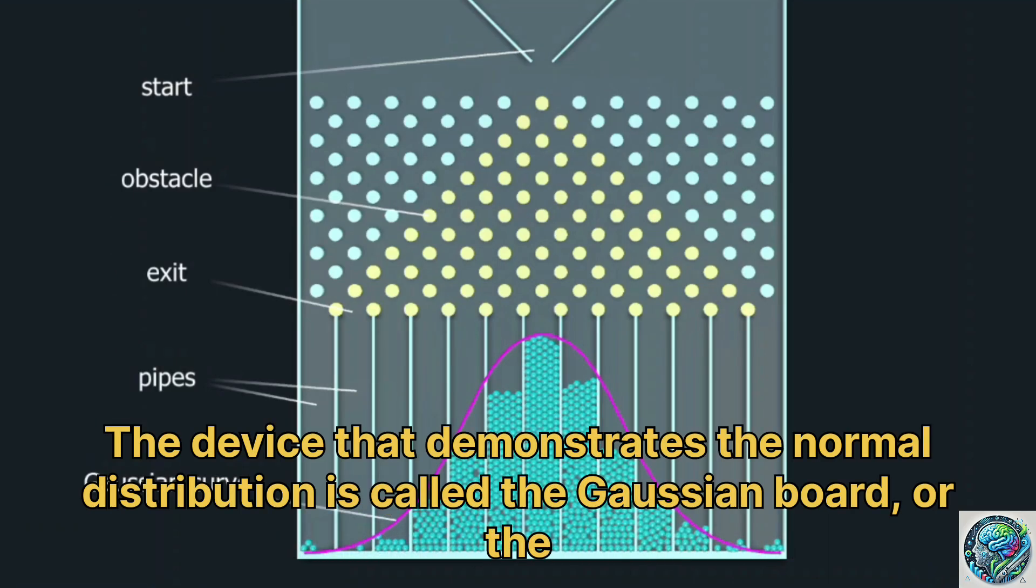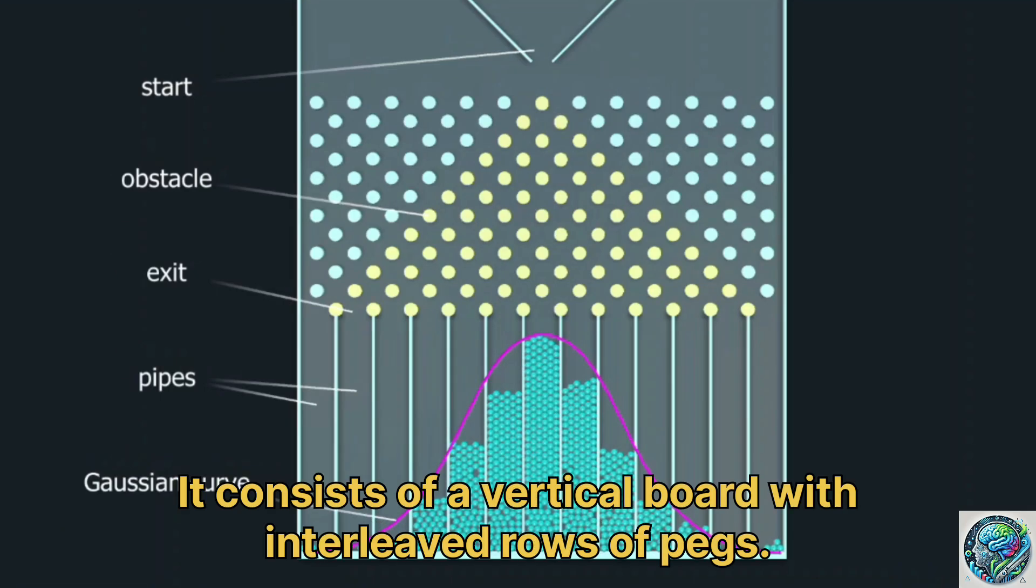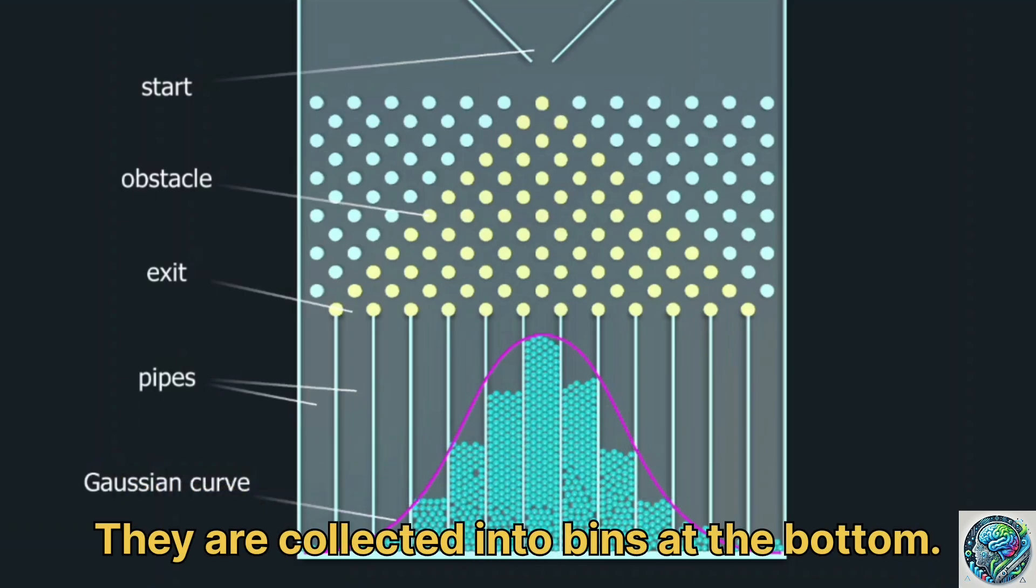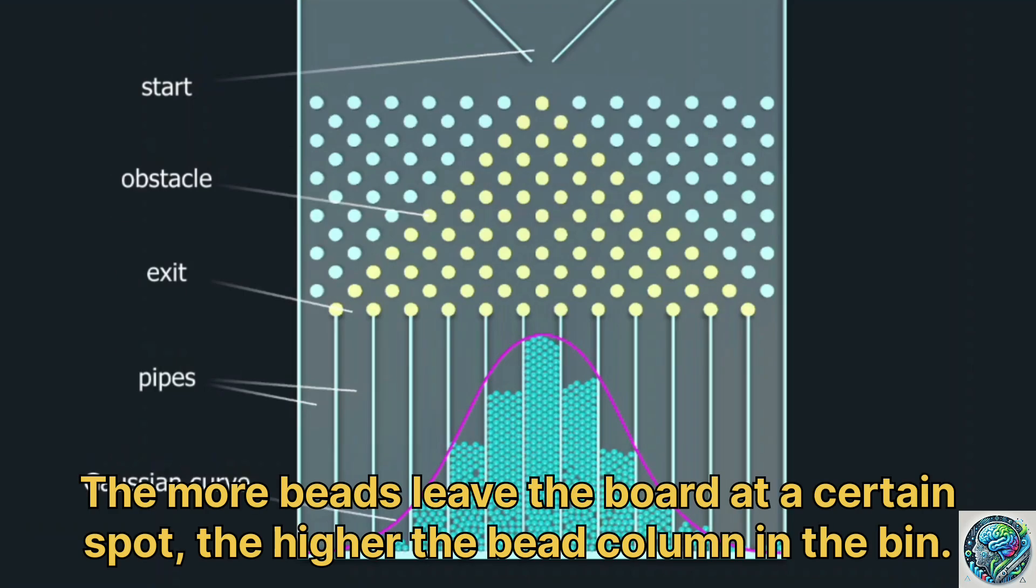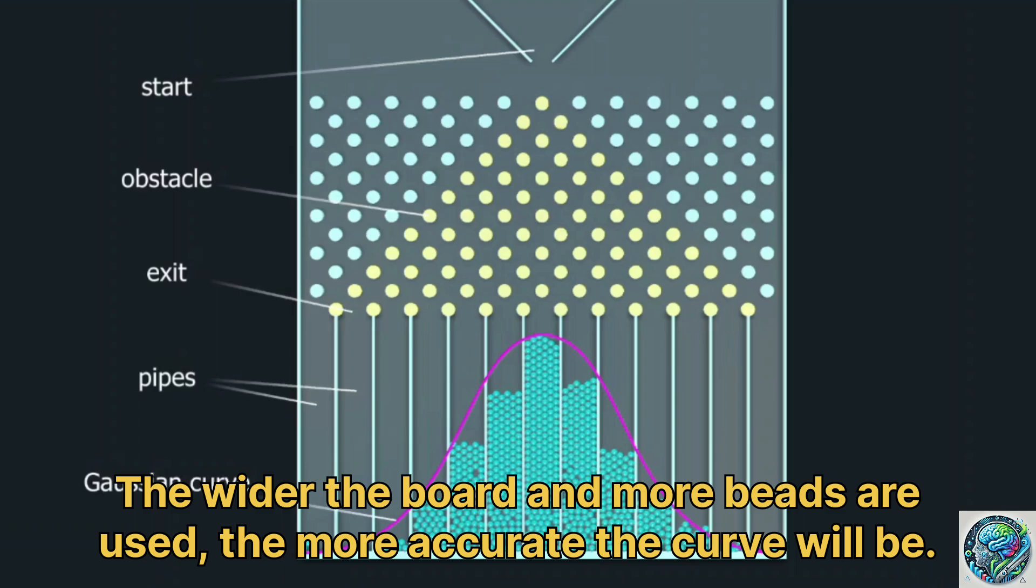The device that demonstrates the normal distribution is called the galton board, or the bean machine. It consists of a vertical board with interleaved rows of pegs. When beads are dropped from the top, they bounce either left or right as they hit the pegs. They are collected into bins at the bottom. The more beads leave the board at a certain spot, the higher the bead column in the bin. The heights of the bead columns accumulated in the bins form a bell curve. The wider the board and more beads are used, the more accurate the curve will be.